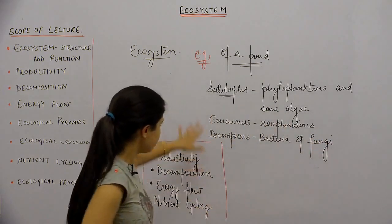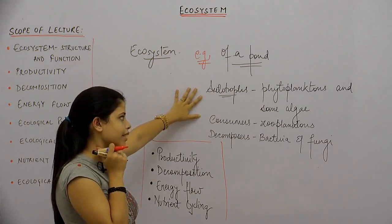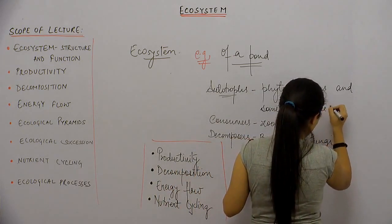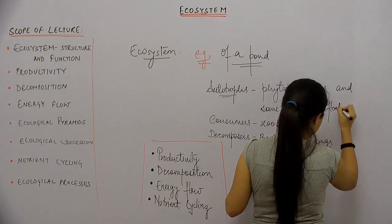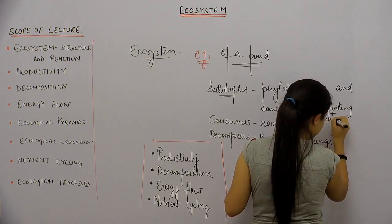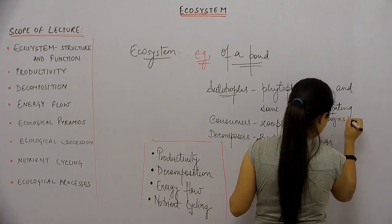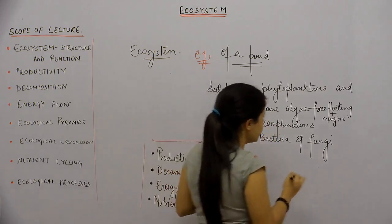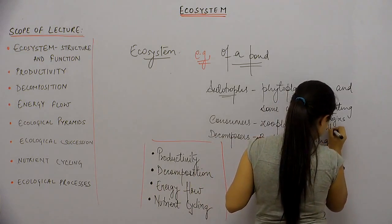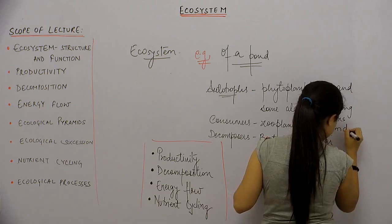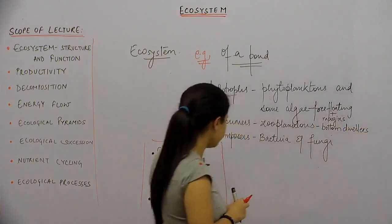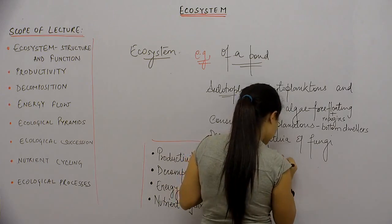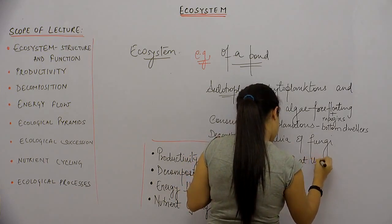In the pond, the autotrophs — phytoplankton and some algae — are usually free-floating and are usually present on the margins of the pond. The consumers, which in this case are the zooplankton, are usually the bottom dwellers. And the decomposers — bacteria and fungi — are usually abundant at the bottom.